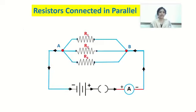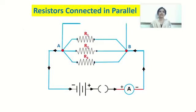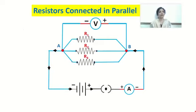The voltmeter is always connected in parallel across two points. In our case, the two points are A and B, and across these two points we will connect the voltmeter. The voltmeter is connected between points A and B to find out how much is the potential difference across the combination of these three resistors connected in parallel. The negative terminal of the battery is connected to end A and the positive terminal to end B.